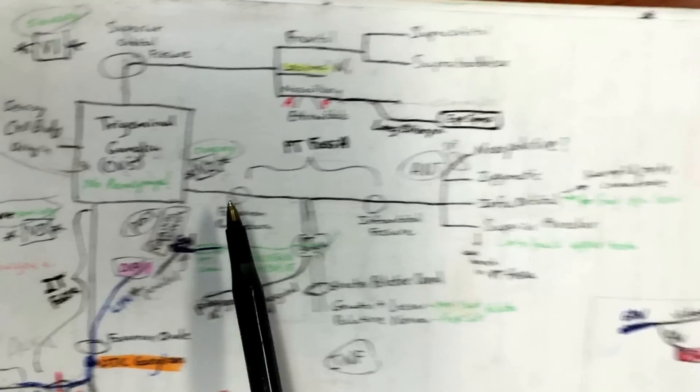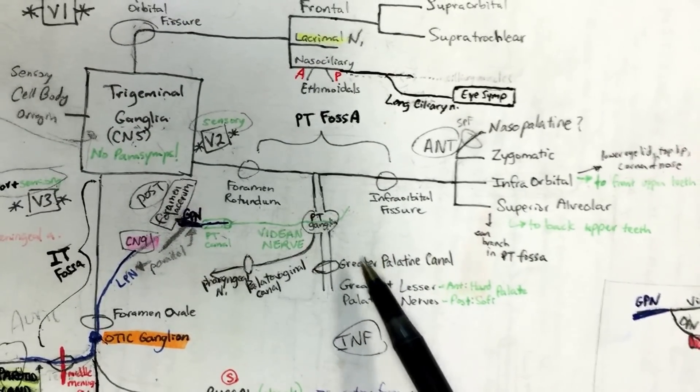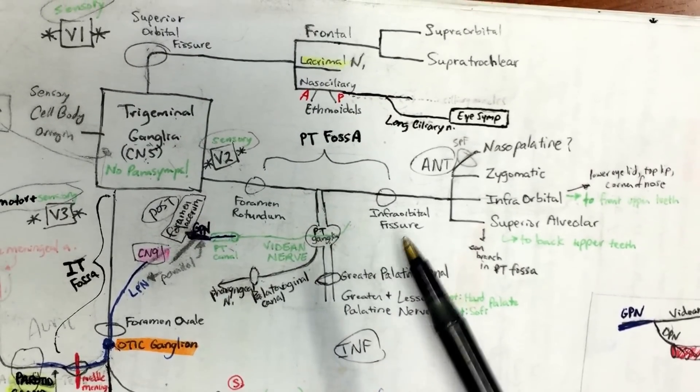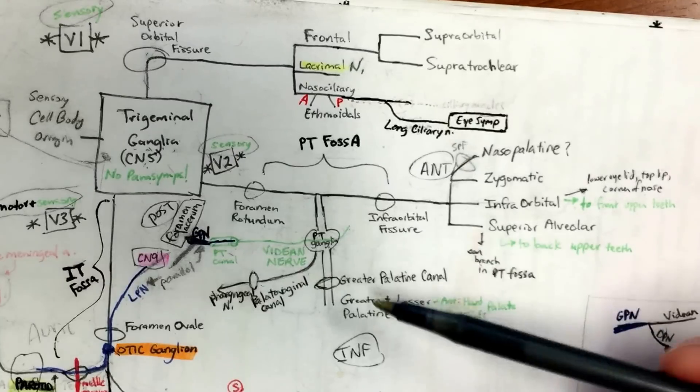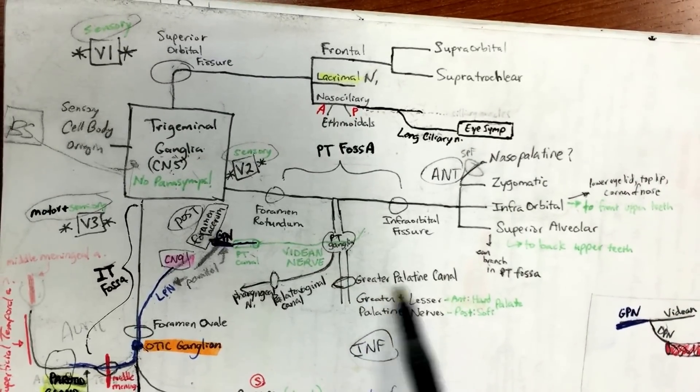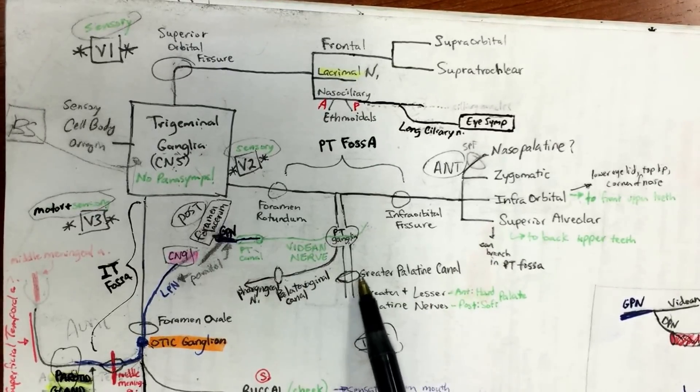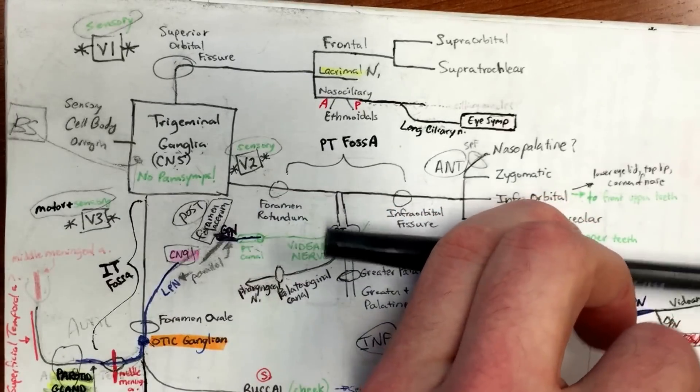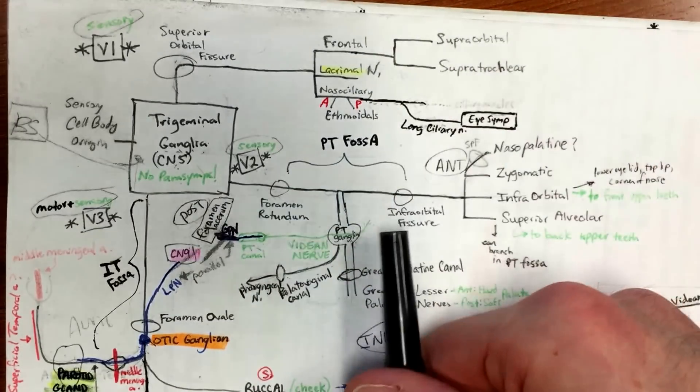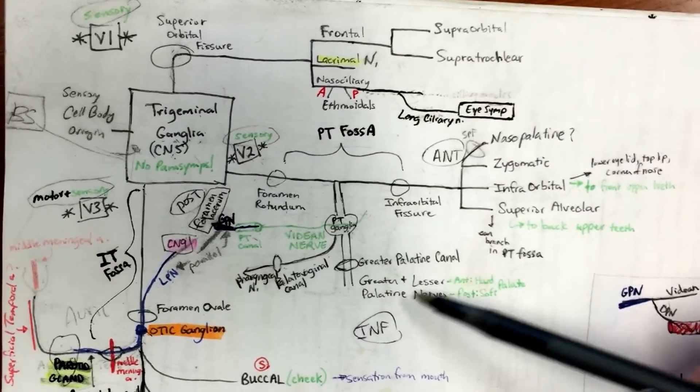A couple of details you can add—the nice thing is if you just draw V2, then the more that you learn about it, the more details you can add. So PT ganglion, you're going to find out later in the chicken bucket that if you drop down, you're going to have greater palatine canal right here, and greater palatine canal is going to have the greater and lesser palatine nerves. You're moving anterior and in the chicken bucket you're moving inferior, obviously going to the palate.